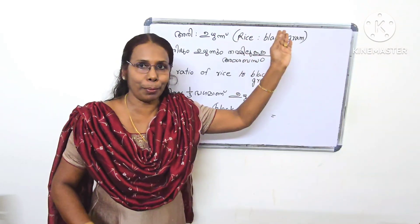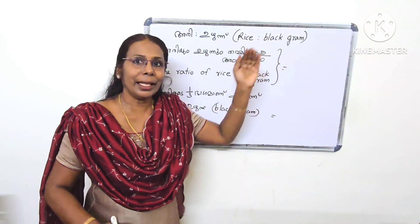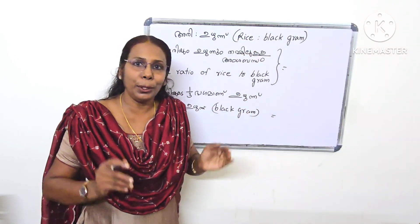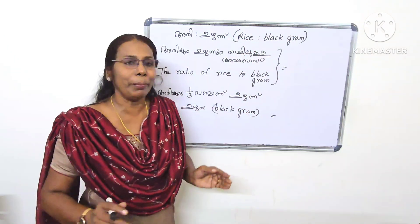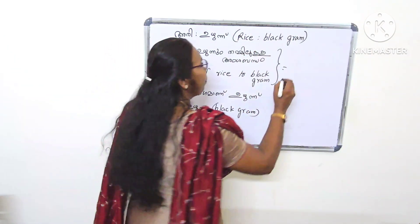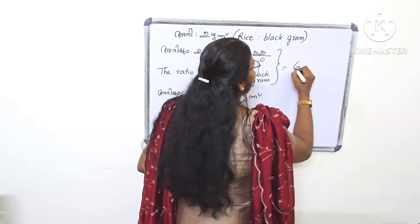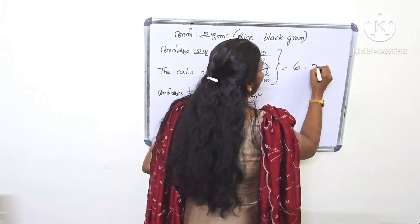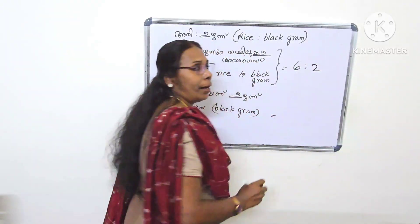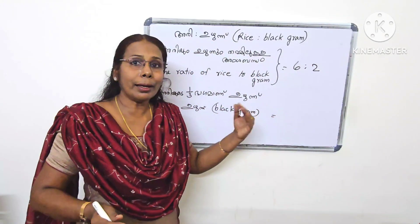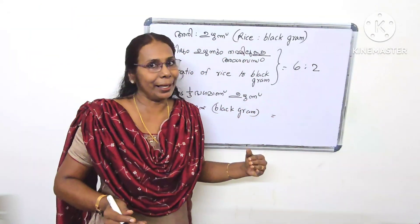Rice is to black gram. What is the ratio for 1 cup of rice?